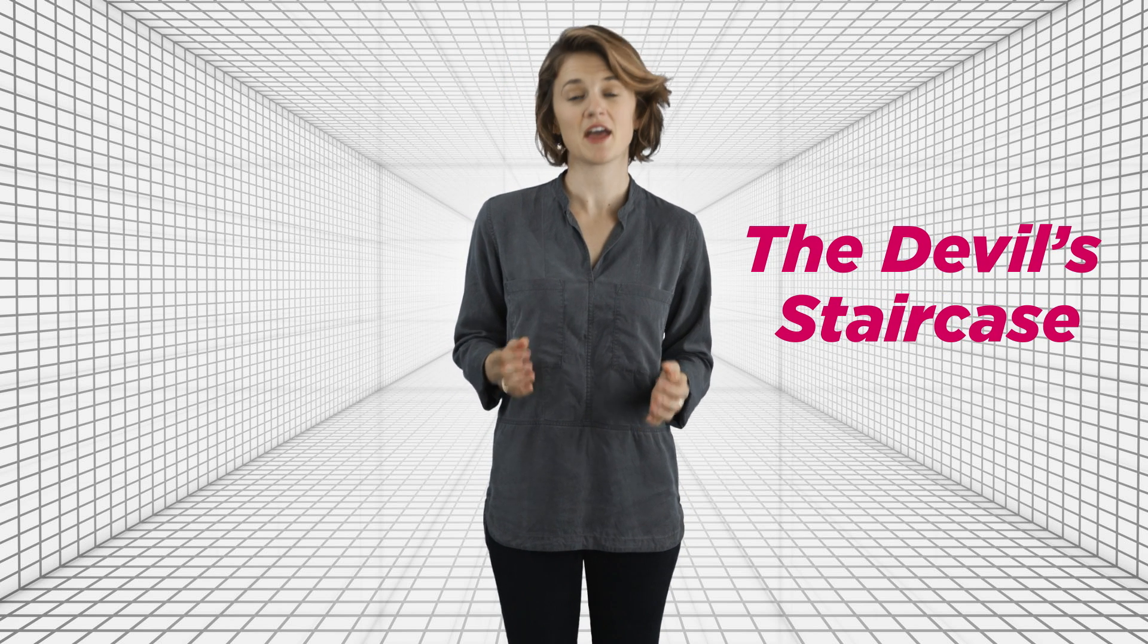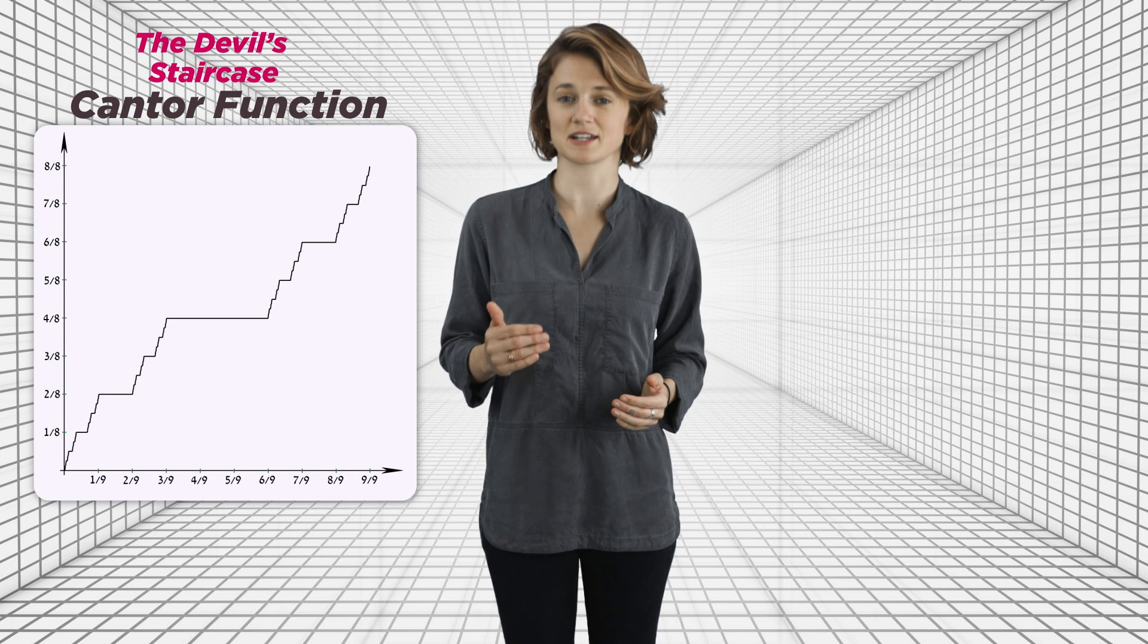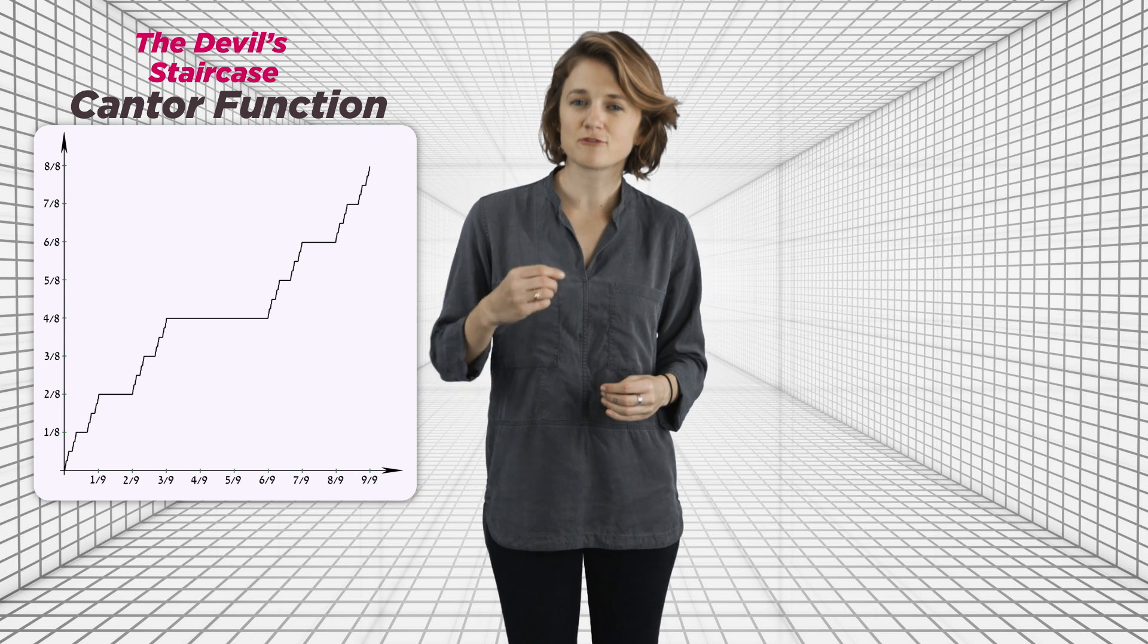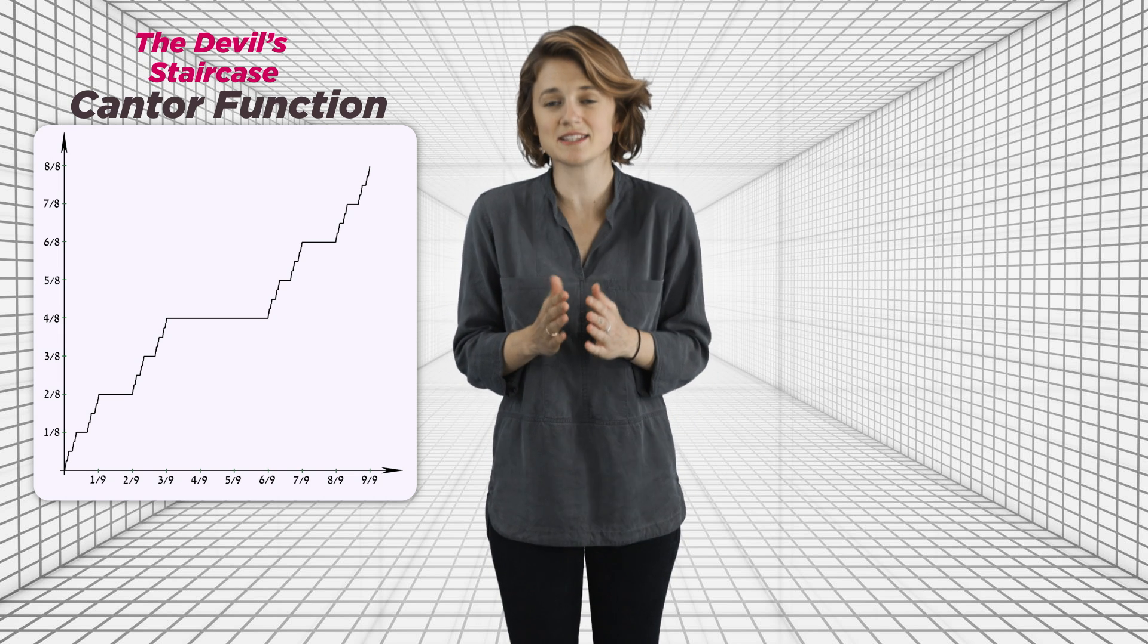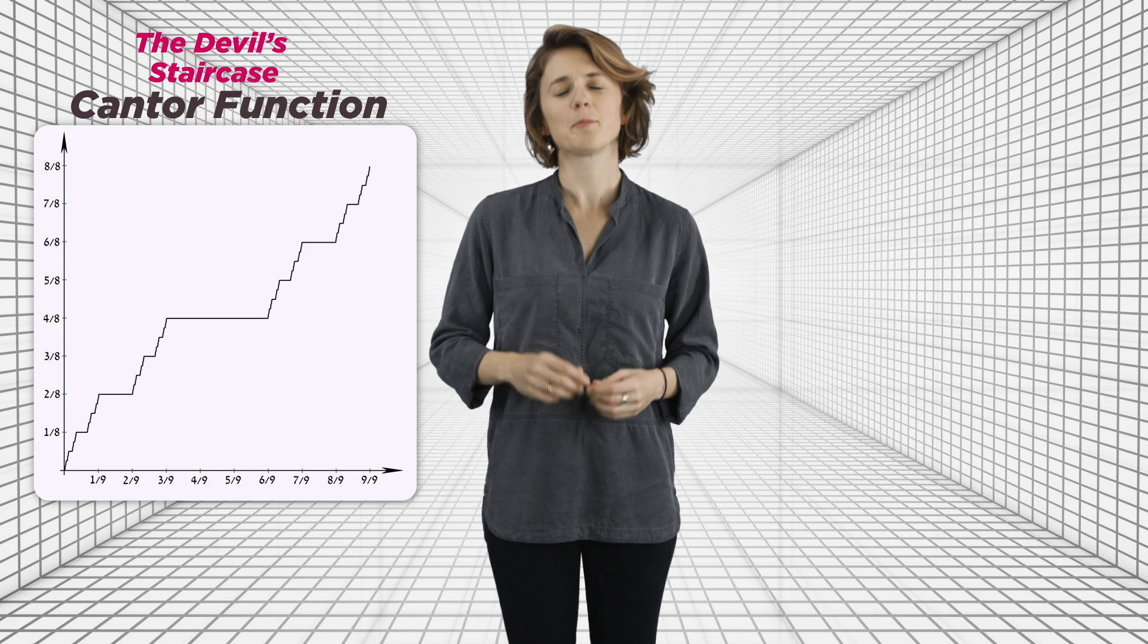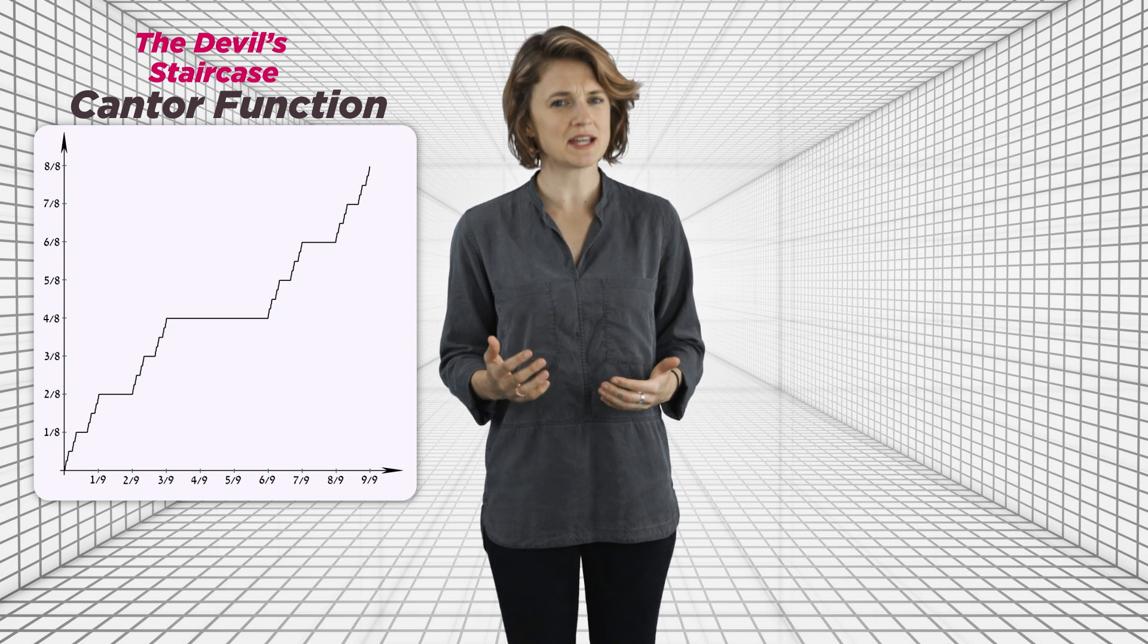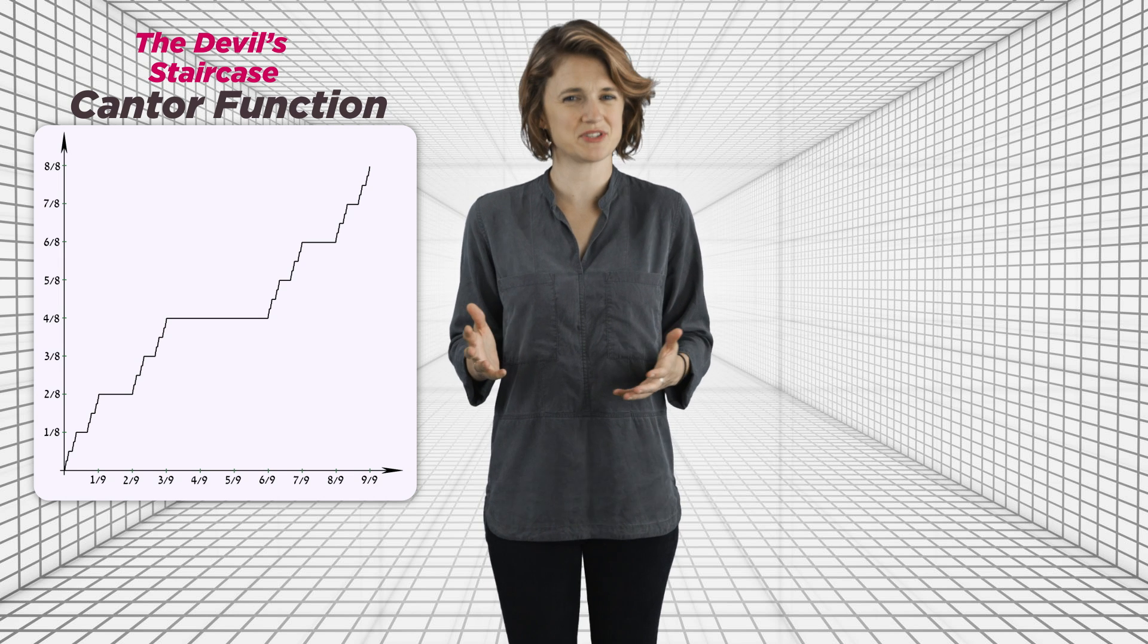Continuous functions, which are intuitively functions you can draw without lifting your pen off the paper, cannot have vertical leaps like this. So is it possible to draw a continuous staircase? Yes, the devil's staircase. The Cantor function is a continuous function. It does not have any vertical leaps. All of its vertical motion is contained within the tiny zero length Cantor set, but it still manages to climb up one unit without ever making a vertical leap. It's just kind of bizarre.